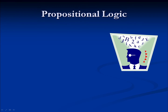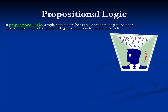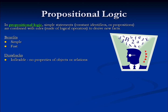In propositional logic, we combine statements based on constant identifiers, also known as propositions, with rules of the same type to derive new information. The benefit of using such a simple system is that it is very straightforward to put together and very fast. In fact, you've probably already used propositional logic in some form, without even realizing it — if you've ever used a pound-define statement, you've made use of propositional logic. Among the drawbacks is that it is not particularly flexible. Because these are constant identifiers with no variables, it is very hard to take the same construct and apply it to different situations. Every possible variant of a rule must be explicitly entered if it is to be triggered by the system.